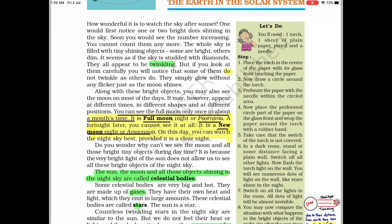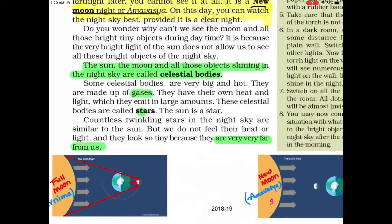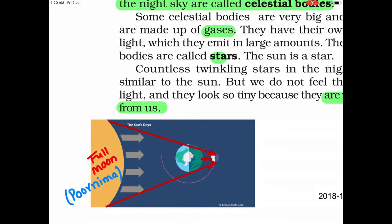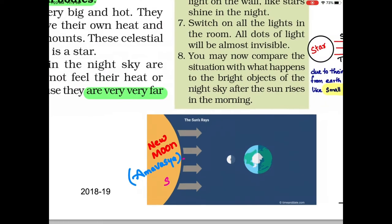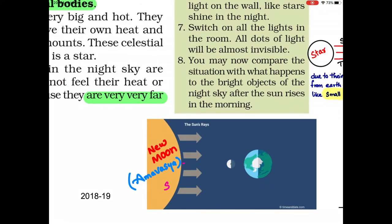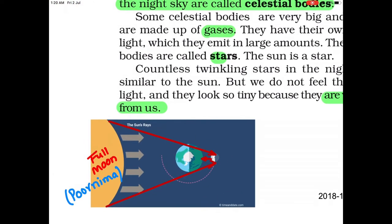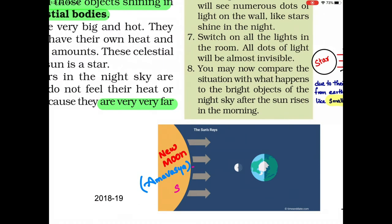Now it deals about the full moon and the new moon. In Purnima (full moon), the Earth is in the middle between the Sun and the Moon, while in the new moon, the Moon will be in the middle between the Sun and Earth. In the full moon, the Sun's rays fall on the Moon and it reflects back to the Earth. We can see the full moon during this time, and during the new moon, we can't see the Moon — that is called Amavasya.